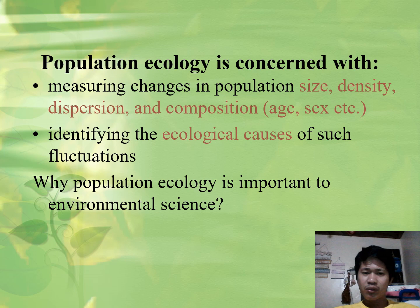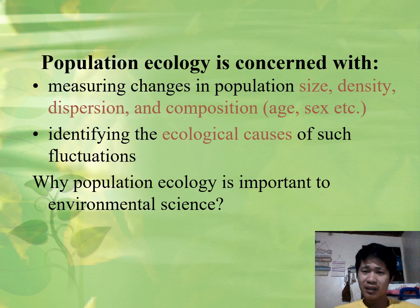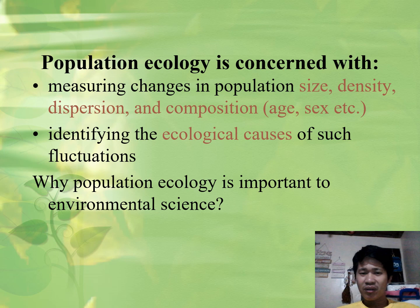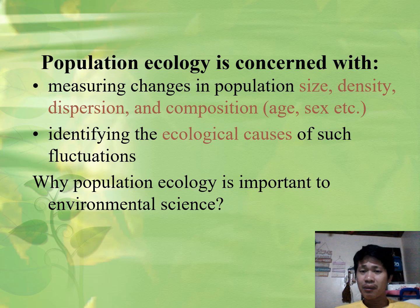Population ecology is concerned with measuring changes in population. As I mentioned, population size could increase or decrease depending on the environment. Density might change, dispersion — the scattering of organisms — and composition may also change. So, the factors affecting these changes — why does size, density, dispersion, or composition change — that is the concern of population ecology. Identifying the ecological causes of such fluctuation — why these things change — that is what population ecology is about.